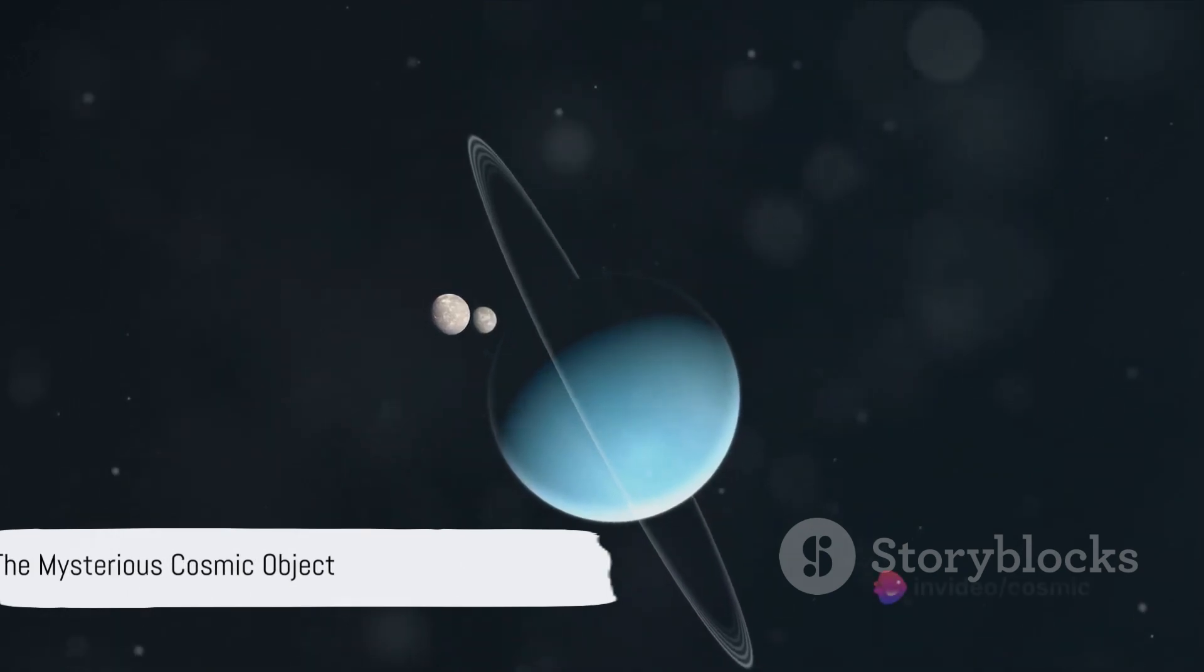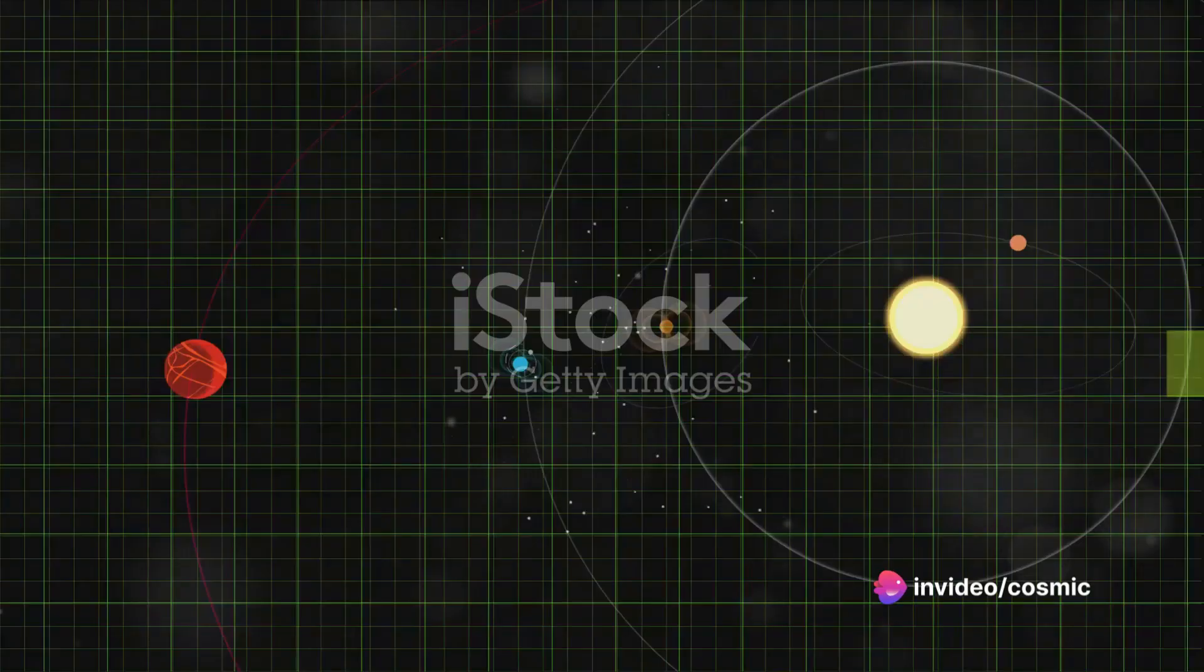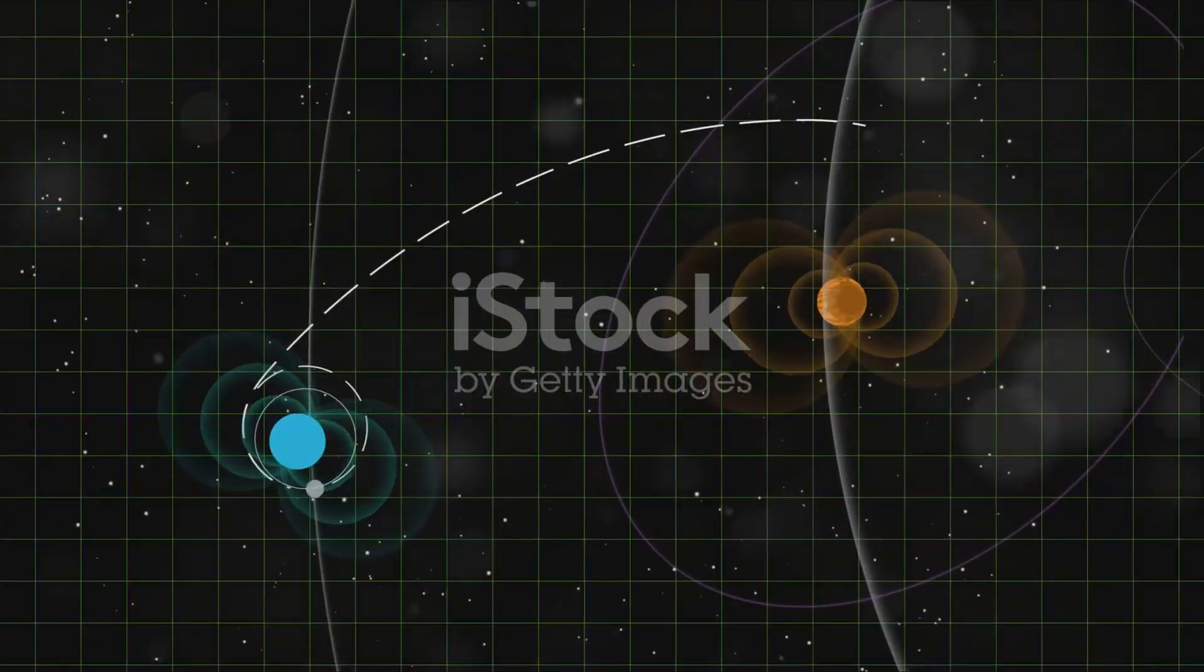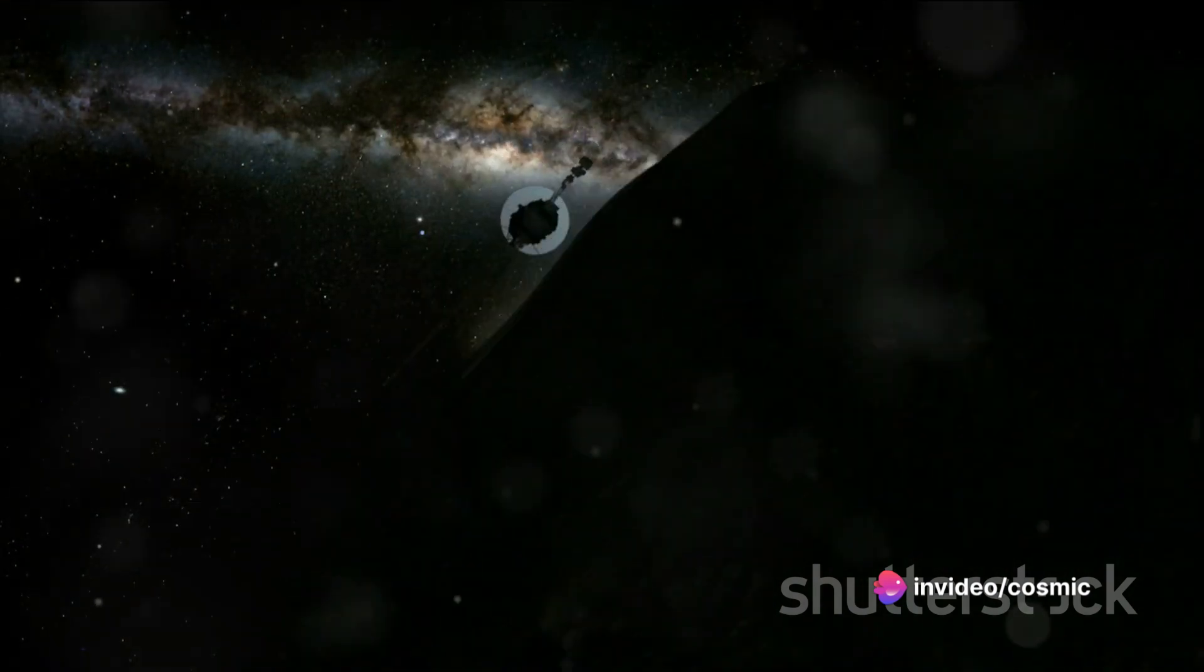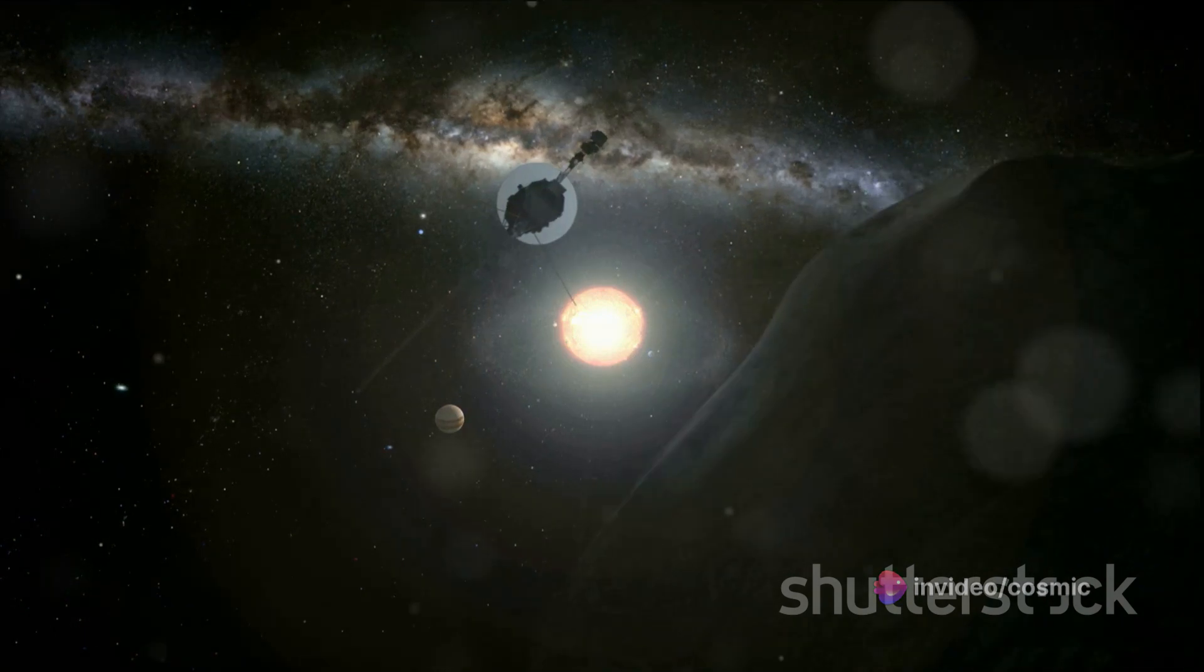But what was this strange thing Voyager 1 had found? As it turns out, Voyager 1 had discovered a cosmic purgatory, an area of space that seems to be caught between two worlds, existing in a state of duality. This region, known as the heliopause, is like a celestial boundary line, a cosmic frontier where our solar system ends and the vast expanse of interstellar space begins.